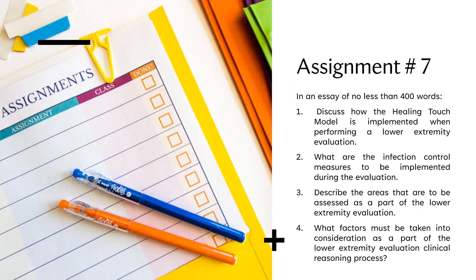We've reached the end of our lecture. For assignment number seven, in an essay of no less than 400 words, discuss how the Healing Touch Model is implemented when performing a lower extremity evaluation, what infection control measures are to be implemented, describe the areas to be assessed as part of the evaluation, and state what factors must be taken into consideration during the clinical reasoning process. If you have any difficulty with this assignment, you may email me or send a text message. My office hours are on Thursdays from 4 to 6pm. I look forward to receiving your assignments — do have a good week.